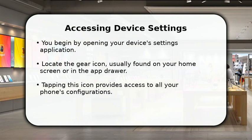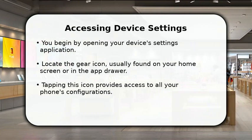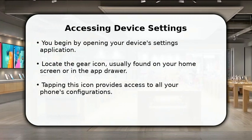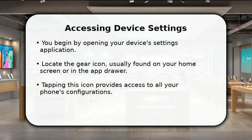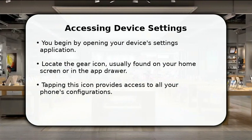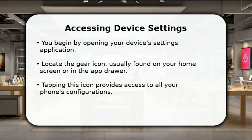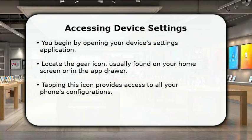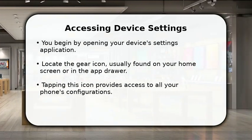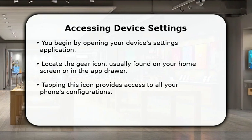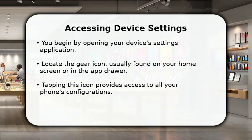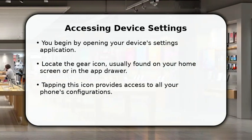First, open your Android device's settings application. You can usually find the settings icon, which looks like a gear, on your home screen or within your app drawer. Tapping this icon immediately takes you into your phone's main configuration menu. This is the starting point for managing many aspects of your device, including your network preferences.